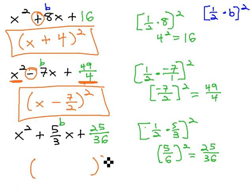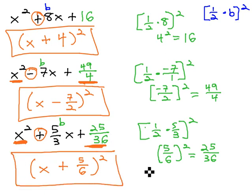And now we can factor it into a perfect square. Taking the square root of the first term which is x, the sign from the middle which is plus, and the square root of the last term. It's a fraction, but we just do numerator and denominator. The square root of 25 is 5, the square root of 36 is 6, and we have factored this perfect square.